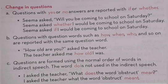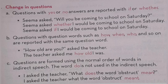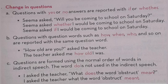Next, we have question forms. When questions are to be answered in yes or no, the reported form uses 'if' or 'whether.' For example, 'Seema asked, will you be coming to school on Saturday?' The indirect form is: 'Seema asked whether I would be coming to school on Saturday,' or 'Seema asked if I would be coming to school on Saturday.' For questions with question words such as 'how,' 'when,' 'who,' they are reported with the same question word in indirect speech. Like, 'How old are you?' asked the teacher — indirect: 'The teacher asked me how old I was.'